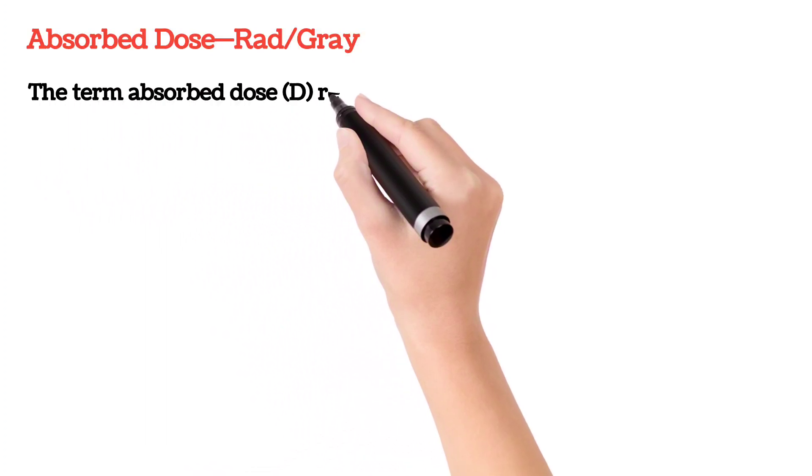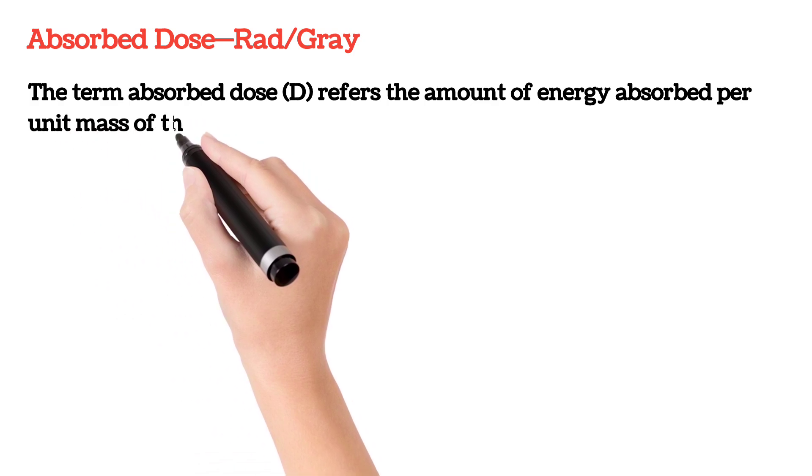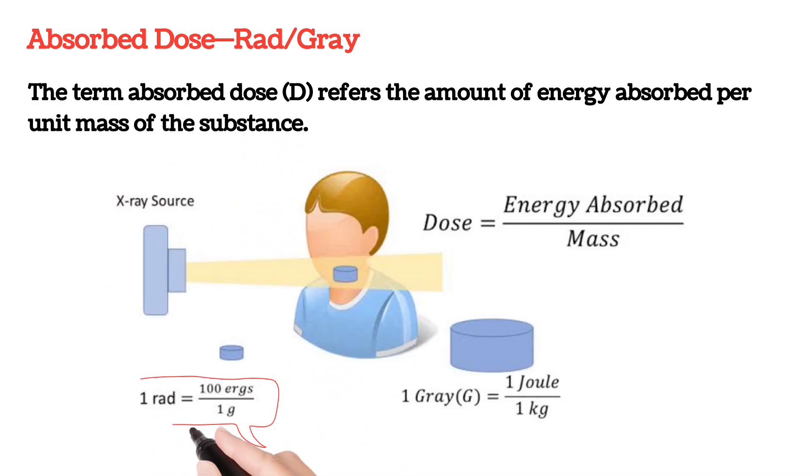The term absorbed dose refers to the amount of energy absorbed per unit mass of substance. The unit of absorbed dose is rad. This unit is independent of type of radiation and the medium.